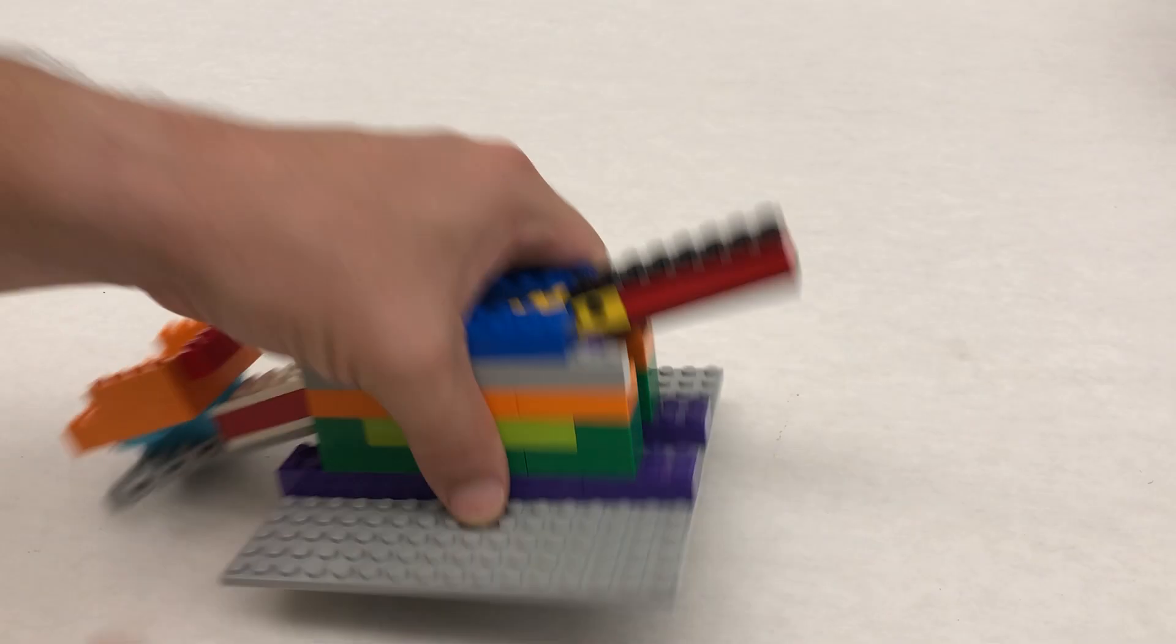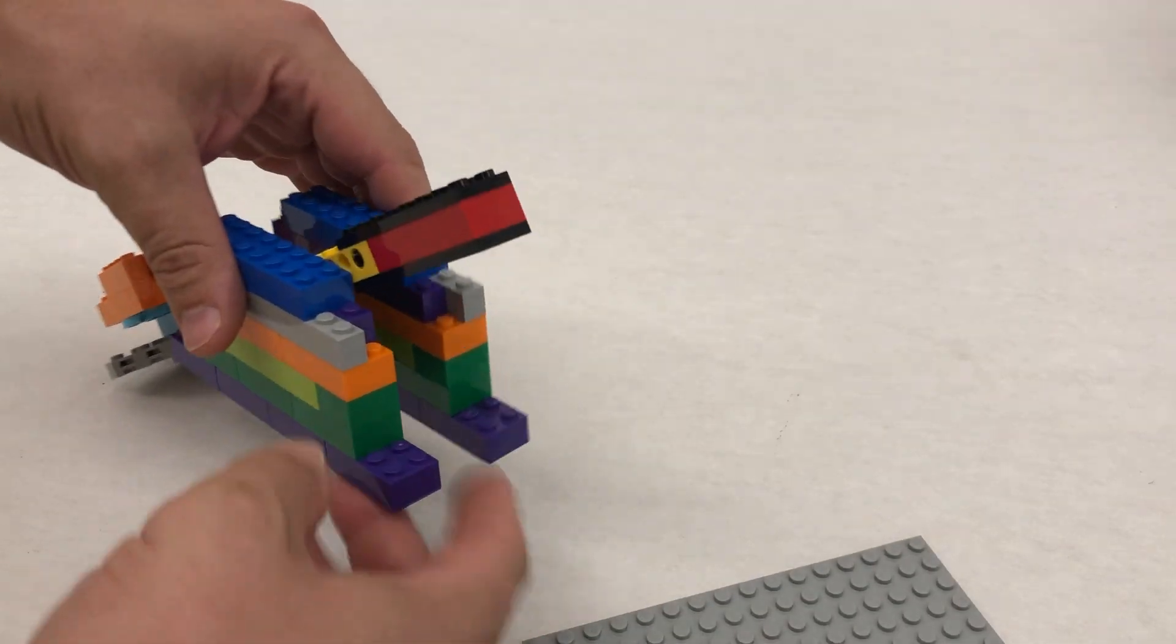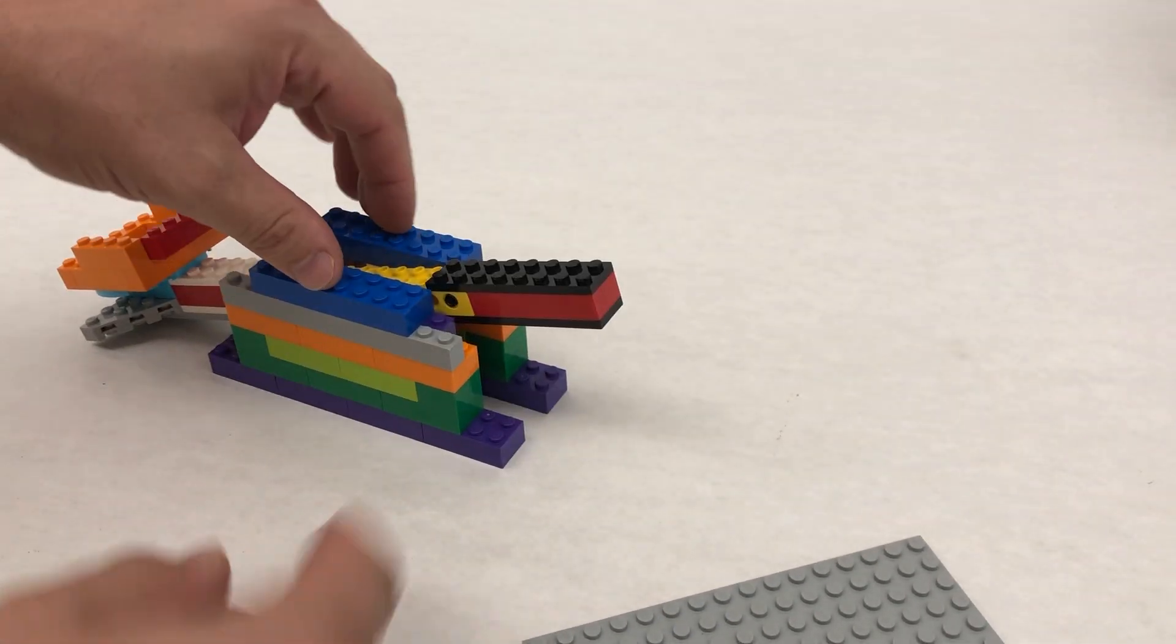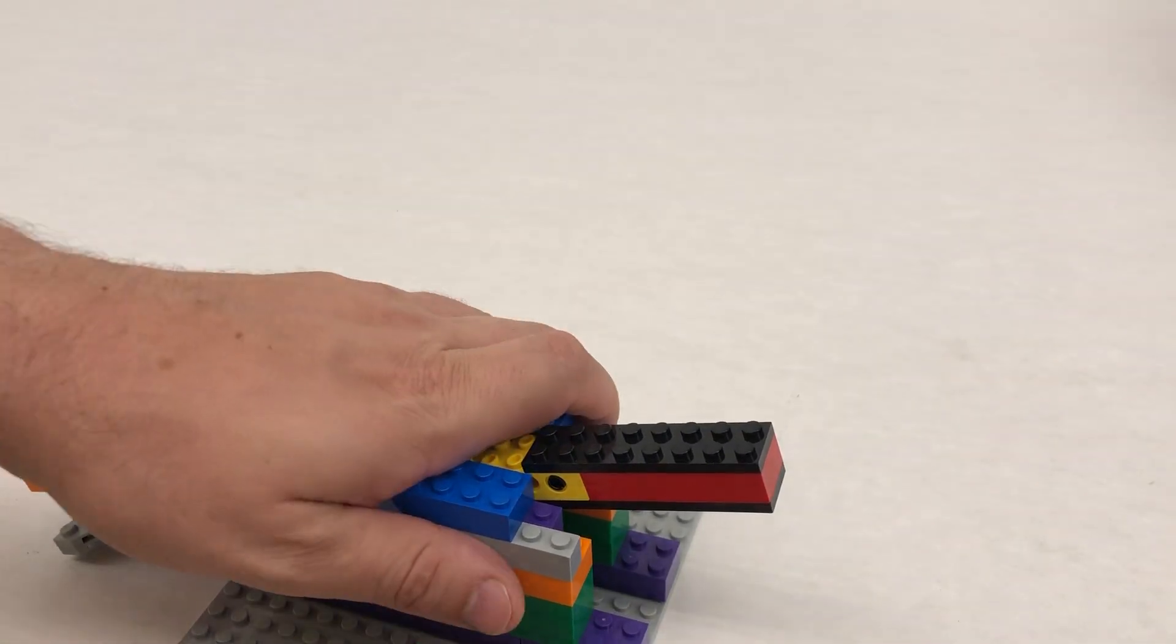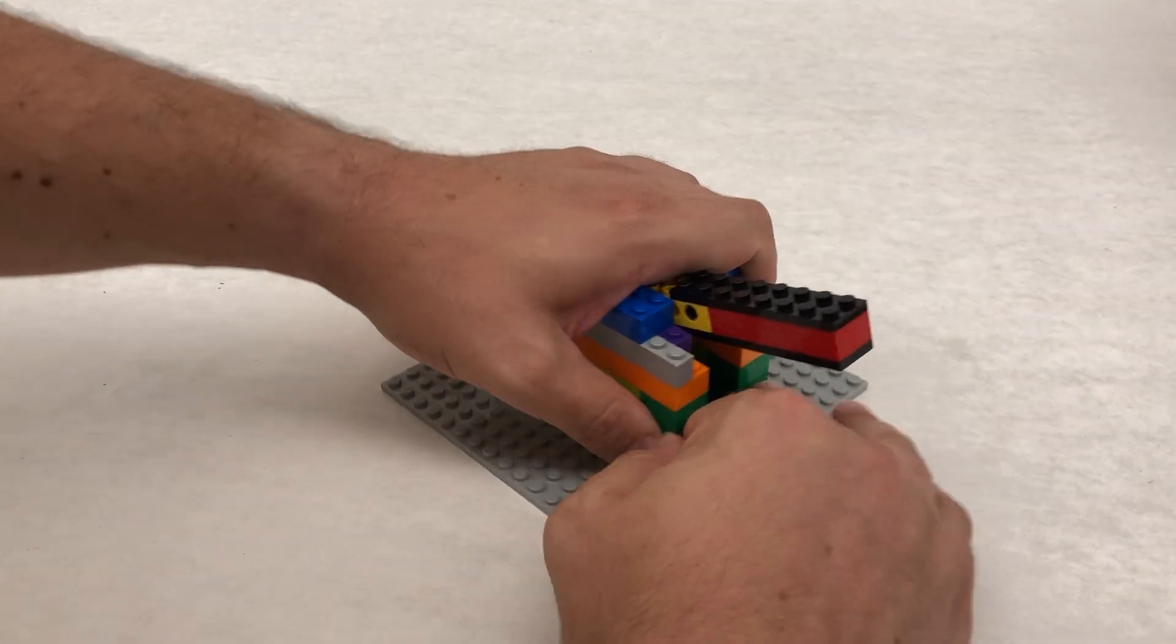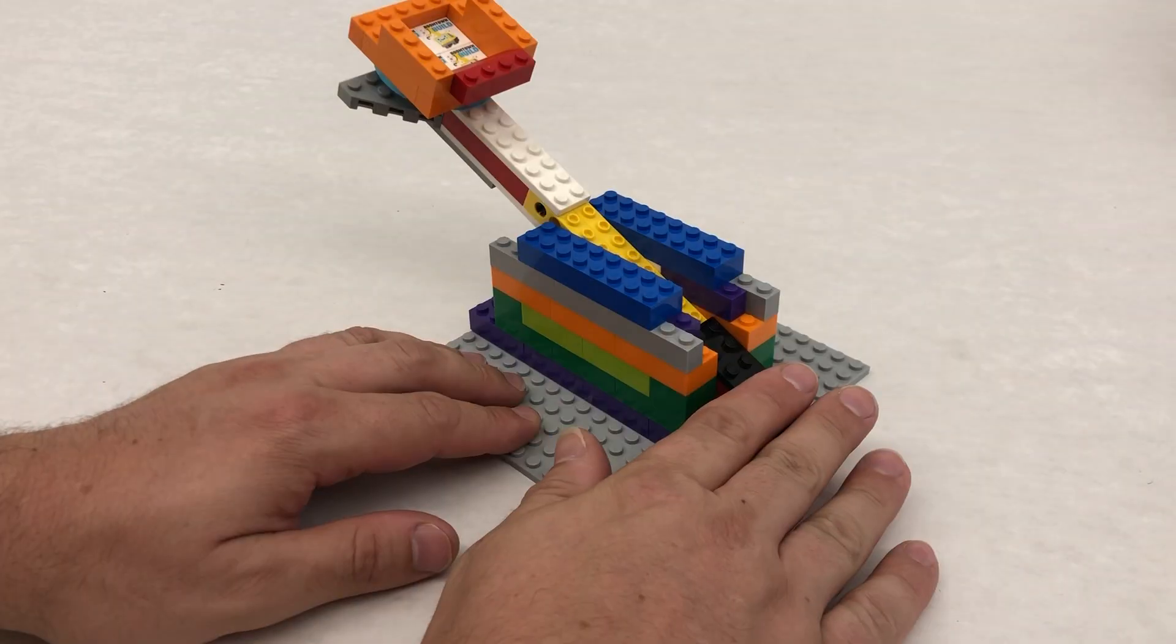You really don't need the gray base anymore, so if you want to remove it you can. Just know that there's nothing securing this part, so when you do launch it, it's gonna wobble a little bit. But you could modify it a little bit, get it nice and secure, and now we have a catapult.